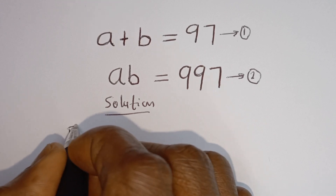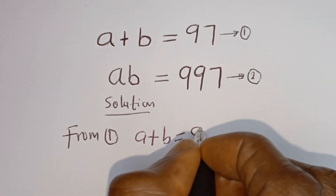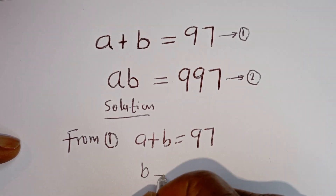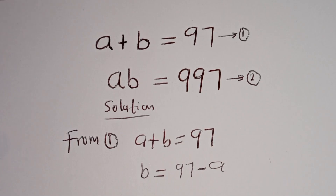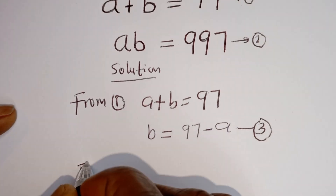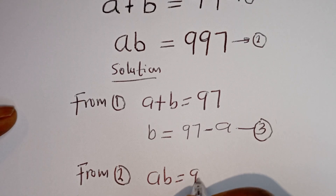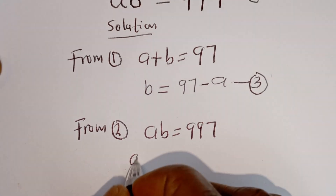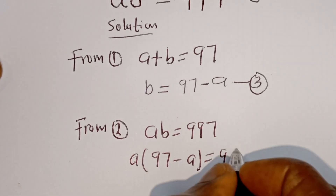From equation 1, a plus b is equal to 97. Let's make b the subject of the formula: b is equal to 97 minus a. Let's call this equation 3. Then from equation 2, we have ab is equal to 997. We can substitute for b: a times (97 minus a) is equal to 997.